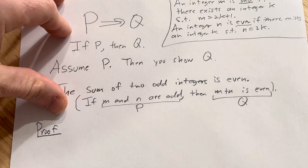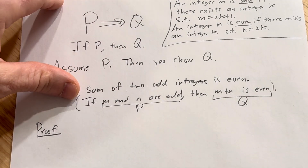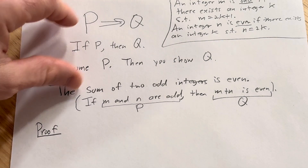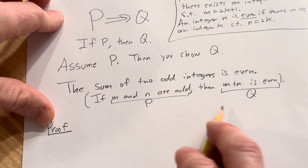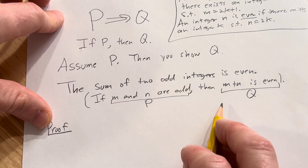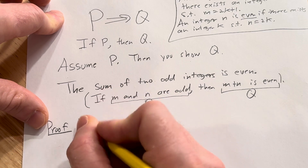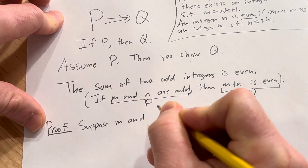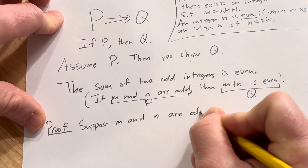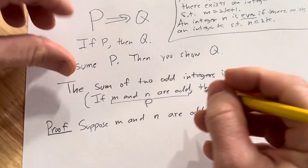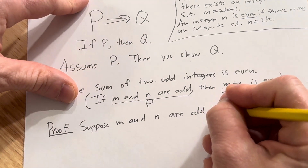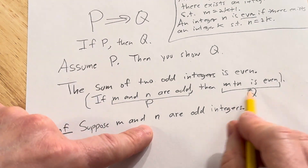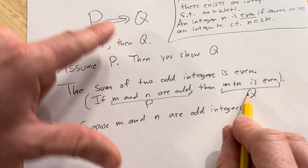This is an easy proof, but it's more about the structure — you really want to have the structure down 100%. This is an if P then Q statement, so we're going to start by assuming that M and N are odd integers. Then we have to show that M plus N is even. You can't just go there — usually there's a step involved.